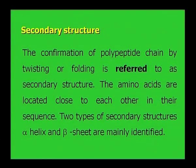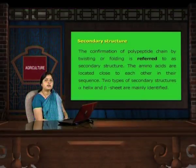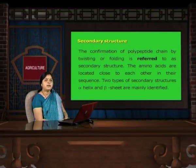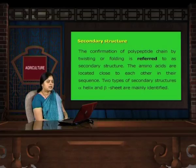The conformation of a polypeptide chain by twisting or folding is referred to as secondary structure. In the secondary structure, polypeptide chains are close to each other in their sequence. Two types of secondary structure are found: alpha helix and beta sheet.